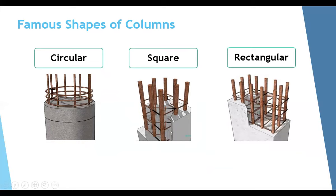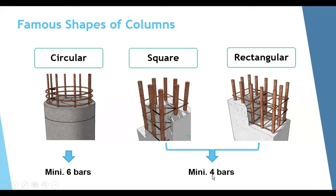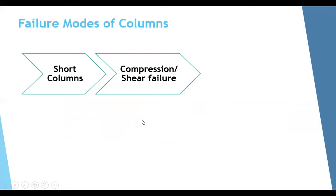The most common column shapes are circular, square, and rectangular, though other shapes like hexagonal or L-shaped also exist. For circular columns, the minimum number of steel bars per the code is six. For square and rectangular columns, the minimum is four bars — at least one bar at each corner. This is the minimum; the actual number may increase based on required steel area and bar spacing.